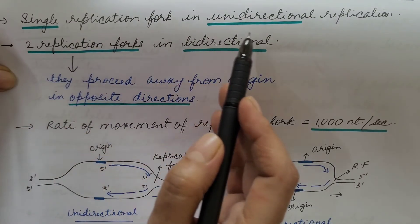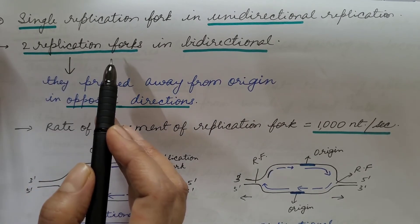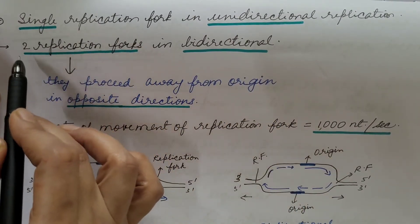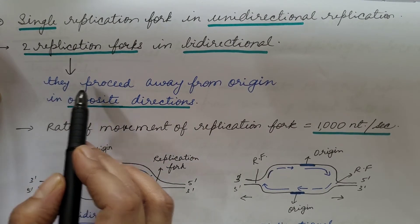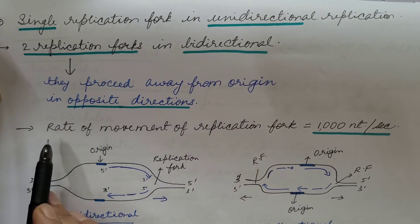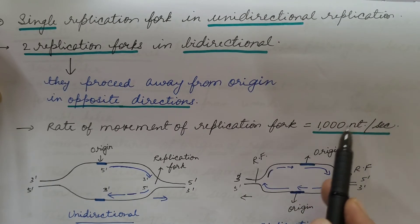There is single replication fork in unidirectional replication and two replication forks in bidirectional replication. And these two replication fork in bidirectional replication proceed away from origin in opposite directions. Rate of movement of replication fork is 1000 nucleotide per second.